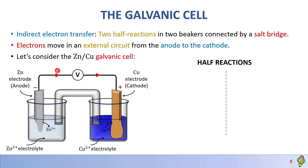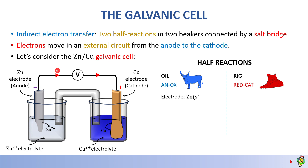Let's look at the half reactions. OIL means oxidation is loss of electrons, and RIG means reduction is gain of electrons. We also have AN OX and RED CAT, meaning anode is where oxidation happens and cathode is where reduction happens. On the oxidation side, the electrode is zinc and the electrolyte is zinc 2+ or zinc sulfate. The half reaction is zinc becoming zinc 2+, losing two electrons that go into the external circuit.